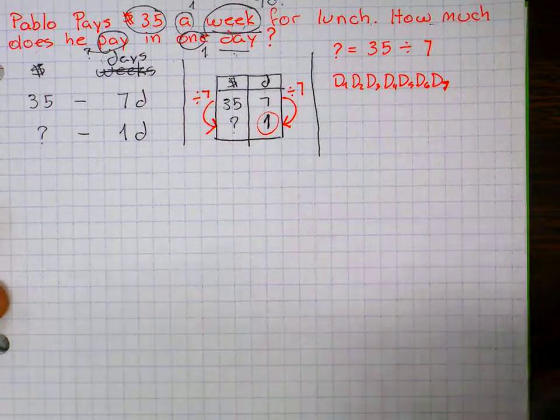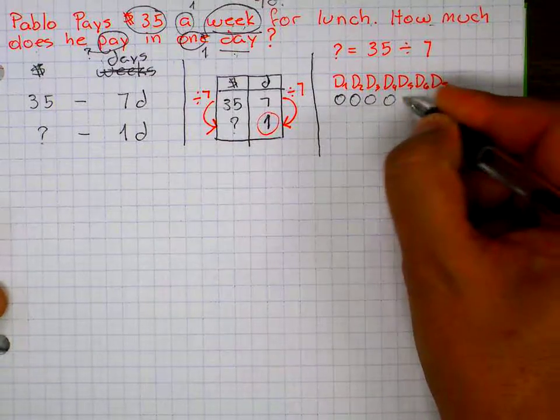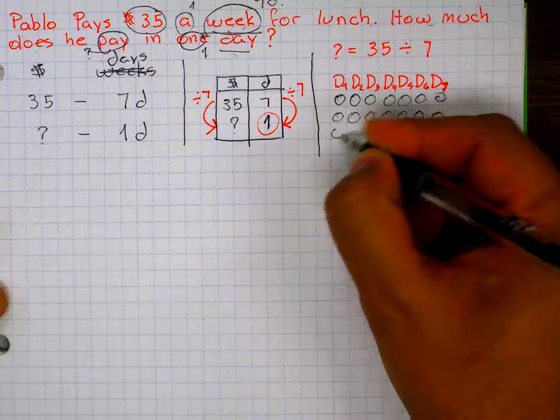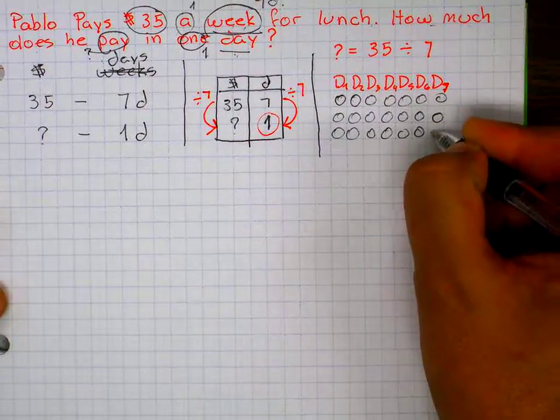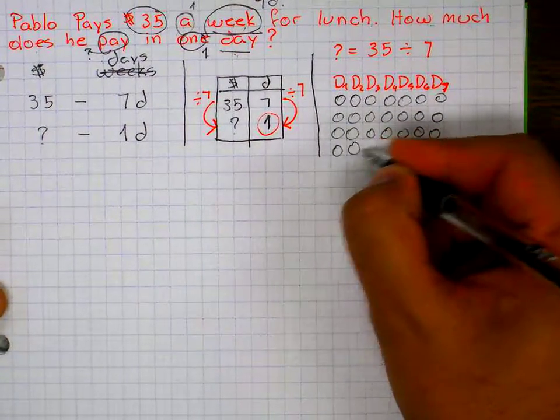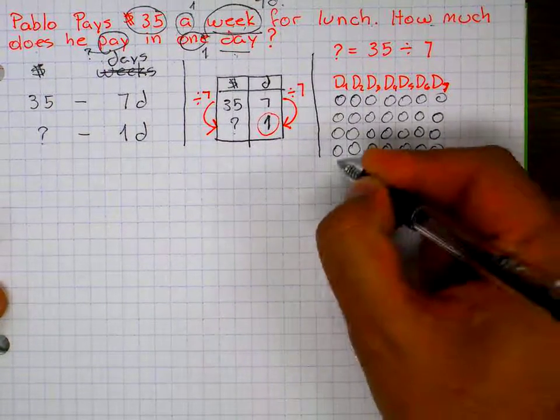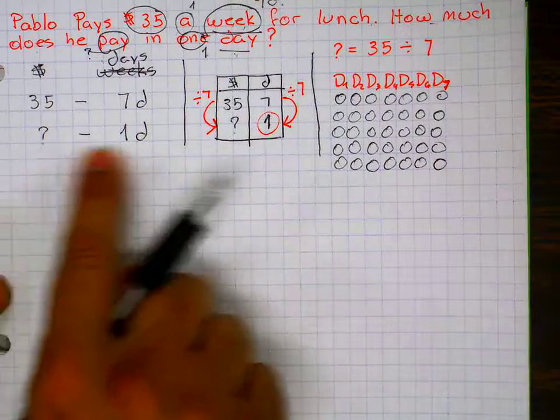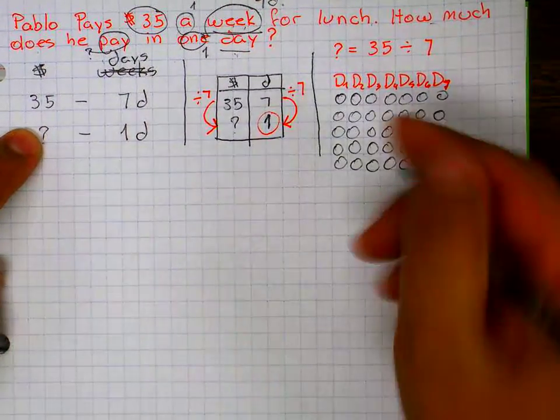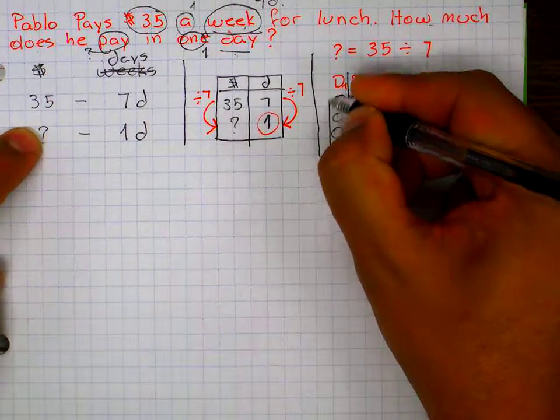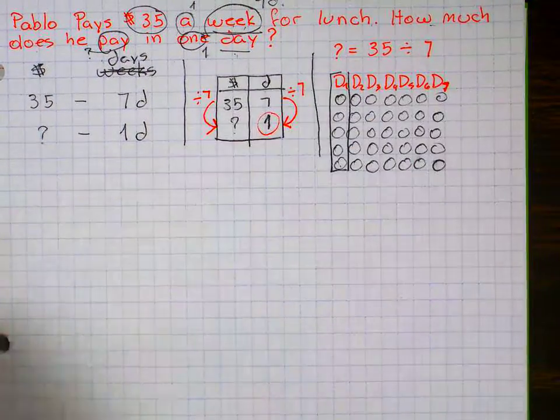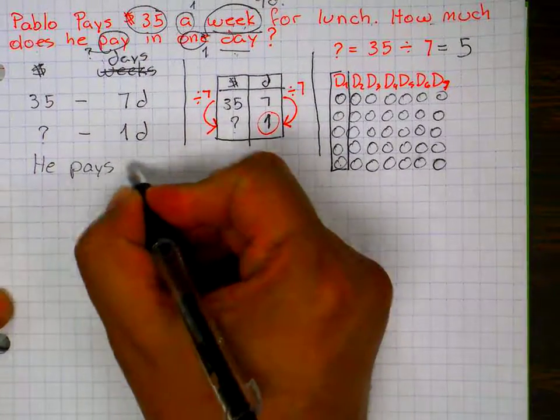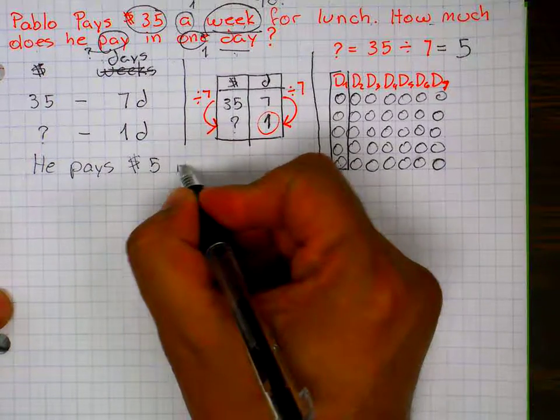Each one at a time. So 1, 2, 3, 4, 5, 6, 7, 8, 9, 10, 11, 12, 13, 14, 15, 16, 17, 18, 19, 20, 21, 22, 23, 24, 25, 26, 27, 28, 29, 30, 31, 32, 33, 34, 35. And my question is, how many are in only one day? So in one day are five. So 35 divided by seven is five dollars each day.